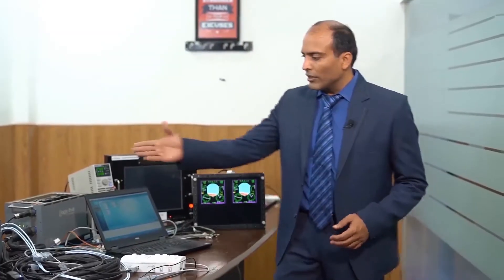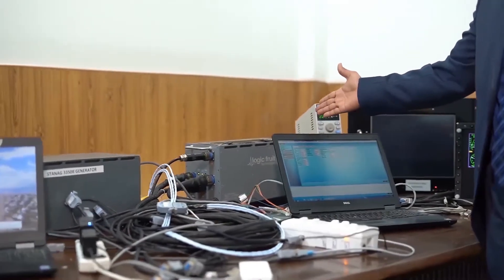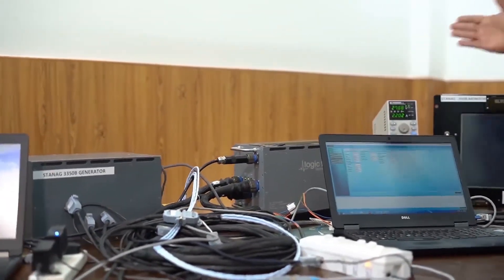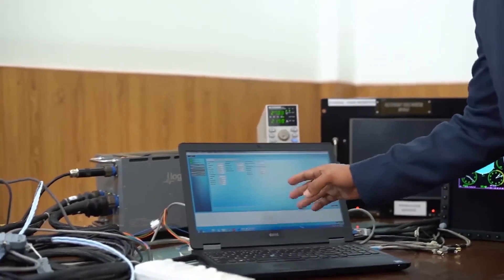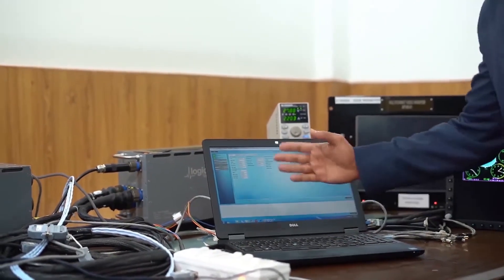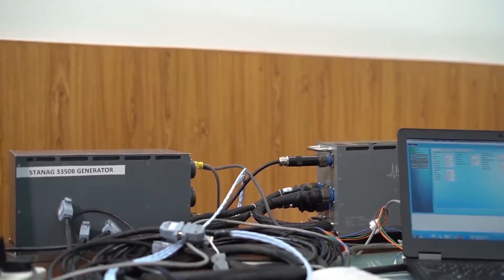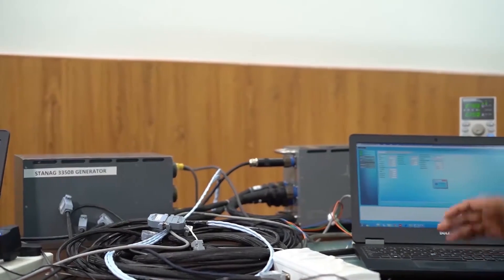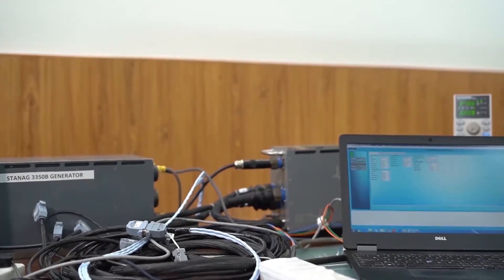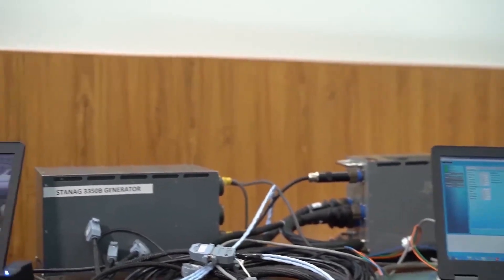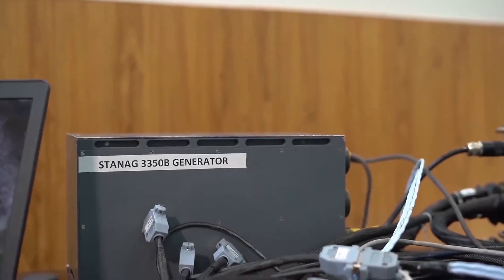Now the third scenario is stannic input to stannic output. This is the same stannic generator giving input to this chassis and output is going to this stannic monitor. You can see in this GUI this is the page to select this scenario. I selected this scenario, and you can see in the stannic monitor that whatever input stannic video we are passing is passed on to the stannic output.